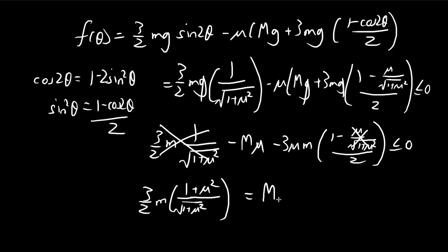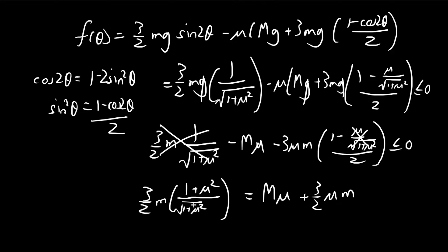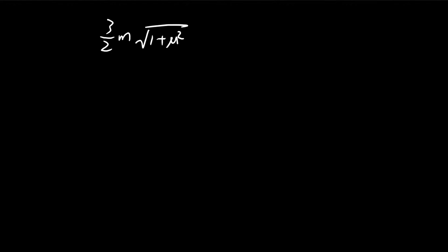And then we have a capital M mu and then a 3 over 2 mu small m. So we're just running out of space. So I'm just going to kind of flip this to make it simpler.